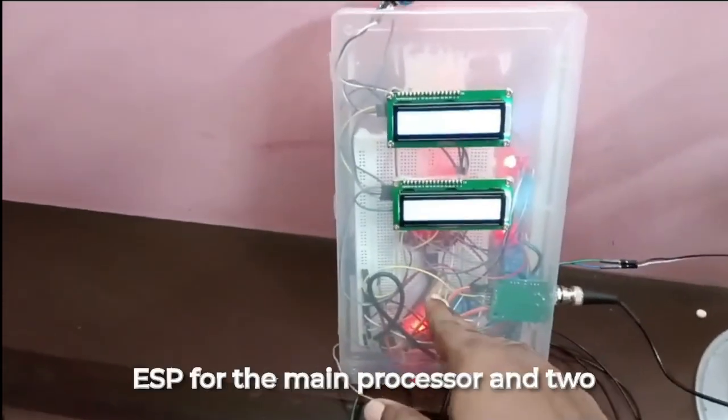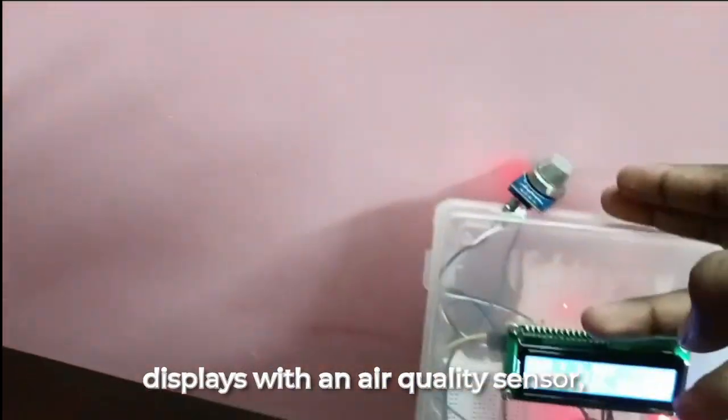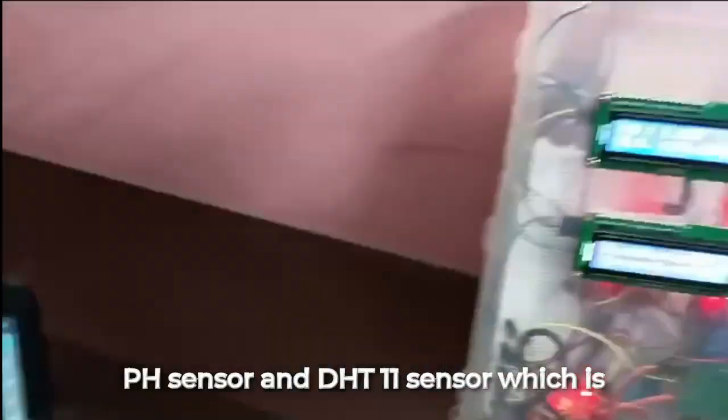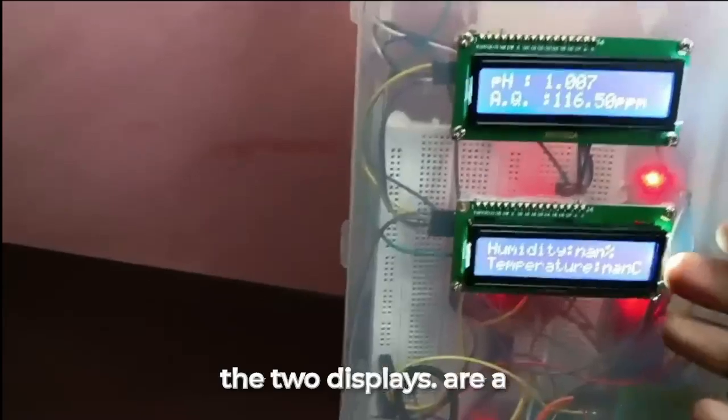As you can see, the project is using an ESP32 for the main processor and two displays with an air quality sensor, pH sensor and DHT11 sensor which is behind it. The data is collected and displayed on the two displays.